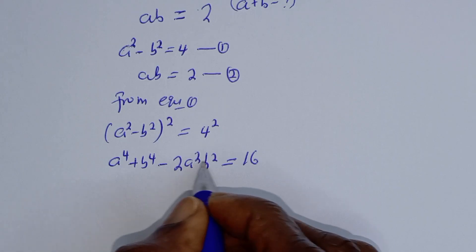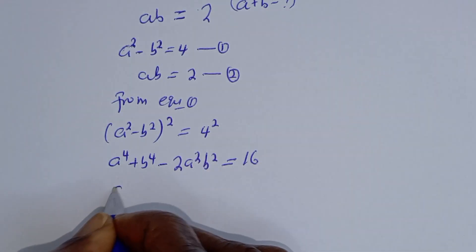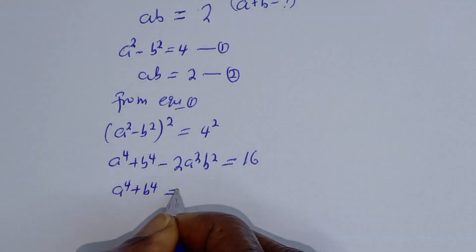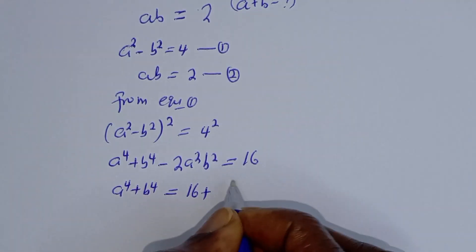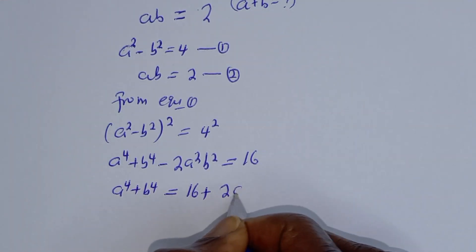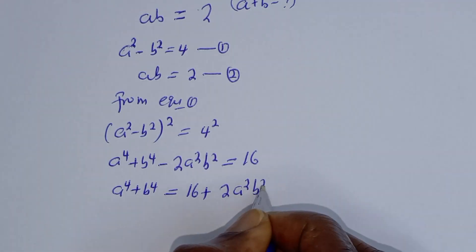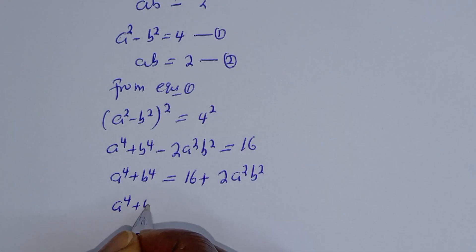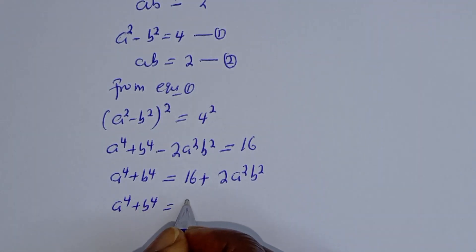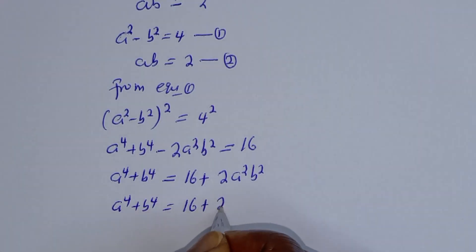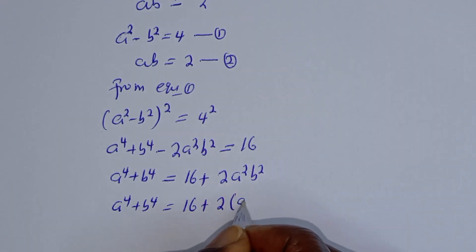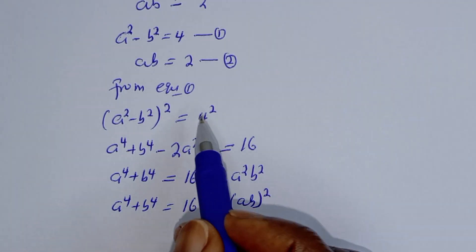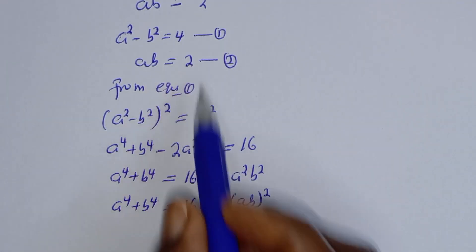Let's take the 2a squared b squared to the other side: a to the power 4 plus b to the power 4 equals 16 plus 2a squared b squared, which is 16 plus 2(ab) squared. But from equation 2, ab equals 2.